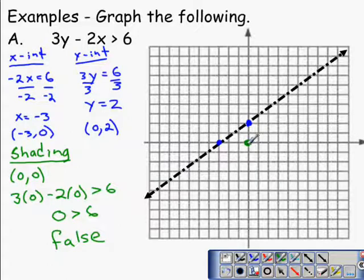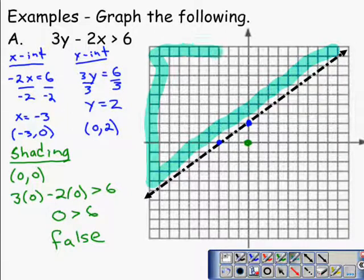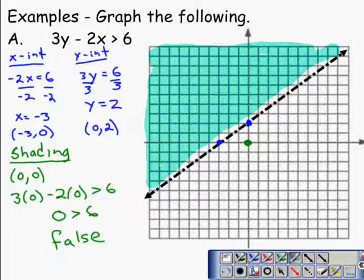Since this point here, 0, 0 makes the original inequality false, we conclude that every point on this side of the graph makes it false. So the solutions fall above the line, so we will take the time to shade the portion of the graph or the half plane above the line. And if you're shading with a pencil, you just need to get it recognizable so that anybody that would look at your solution would understand that this is your solution.